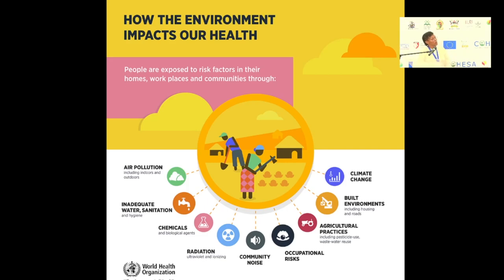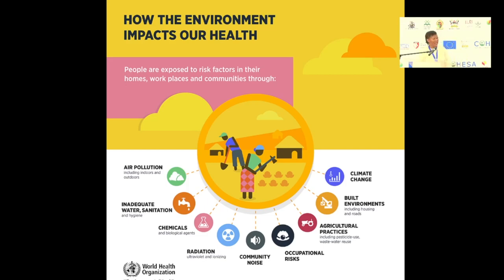This picture shows how the environment impacts human health — the environmental determinants of health. We talk to issues of air pollution, inadequate water, sanitation and hygiene, chemicals including biological agents, radiation, community noise, occupational risks, agricultural practices including pesticide use, water reuse, built environments, housing and roads, and climate change.